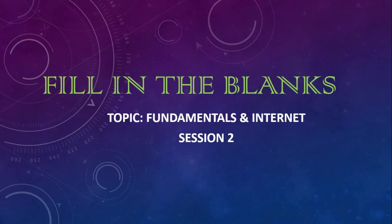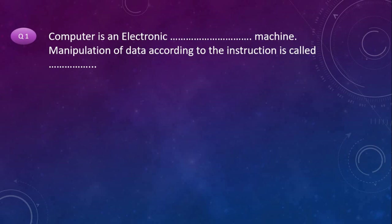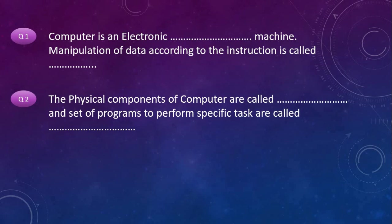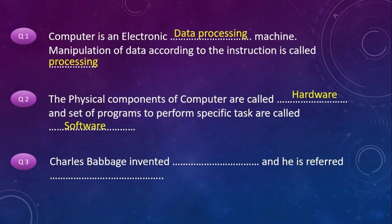Fill in the Blanks – Topic: Fundamentals and Internet, Session 2. First question: Computer is an electronic data processing machine. Manipulation of data according to the instruction is called processing. The physical components of computer are called hardware and the set of programs to perform specific tasks are called software. Charles Babbage invented the analytical engine and he is referred to as the father of computer.